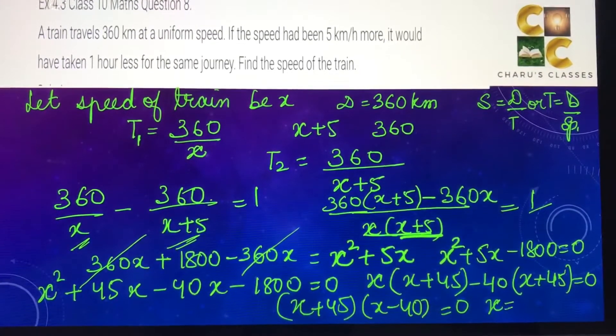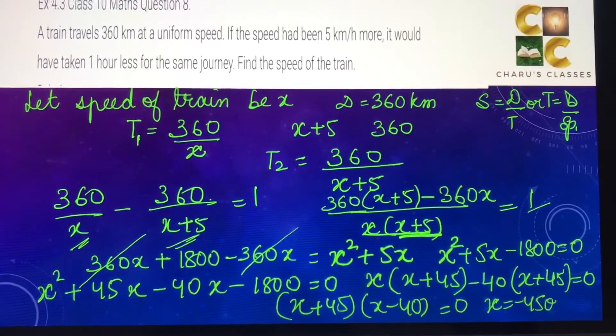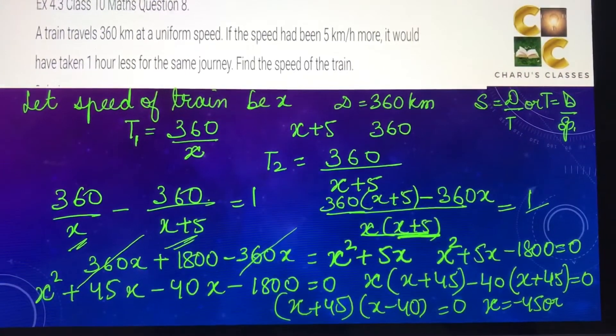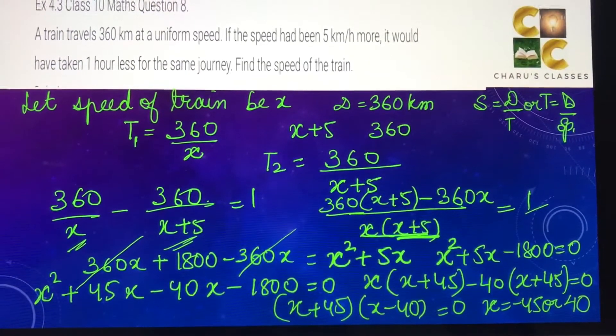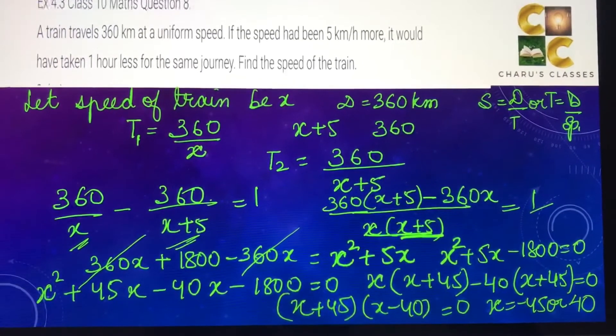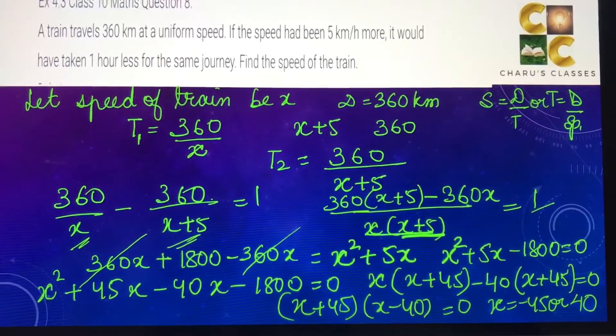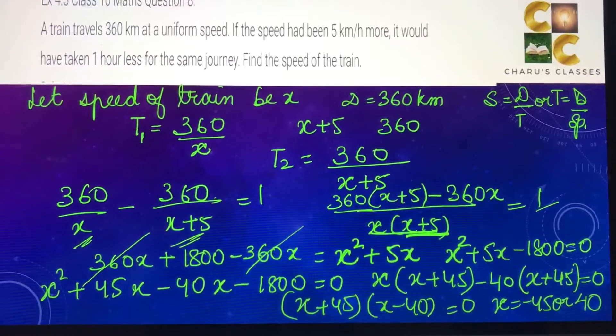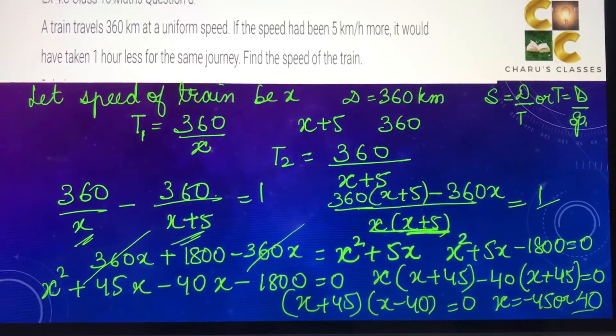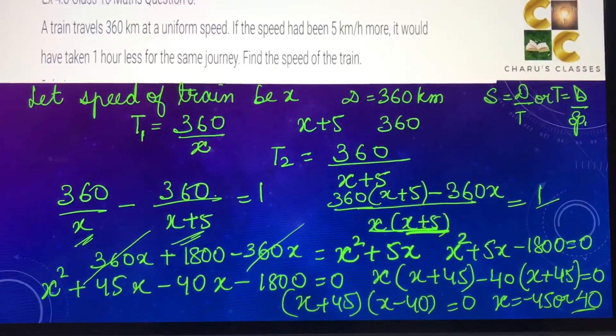Either x + 45 = 0, which gives x = -45, or x - 40 = 0, which gives x = 40. Definitely the speed of the train cannot be negative. So we are going to take the speed as 40 km per hour.